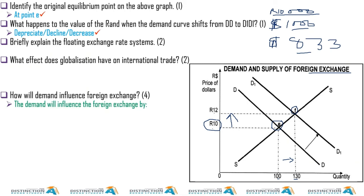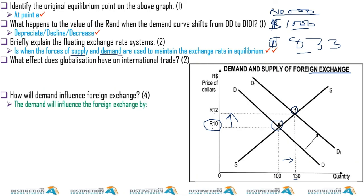This graph illustrates a floating exchange rate system because it uses the forces of demand and supply. If it's not a floating exchange rate system, it's a managed exchange rate system where the central bank intervenes, or it could be a fixed exchange rate — fixed to a commodity like gold or to another currency. This floating exchange rate system is what South Africa is using.